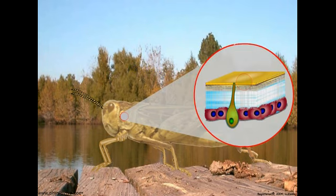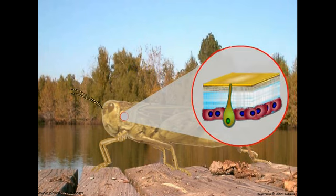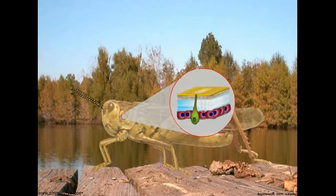The insect exoskeleton is an effective integument, but like a suit of armor, it restricts the size that insects can attain, and its rigidity prevents growth except by replacing the existing exoskeleton with a new, larger one by molting. Let us see how an insect is able to molt to remove an exoskeleton that has become too small, and replace it with a new one that allows for growth.